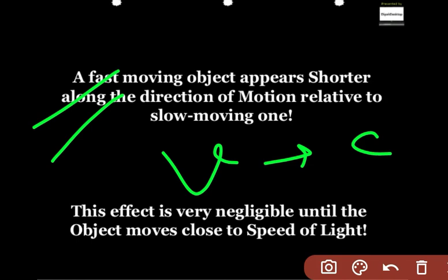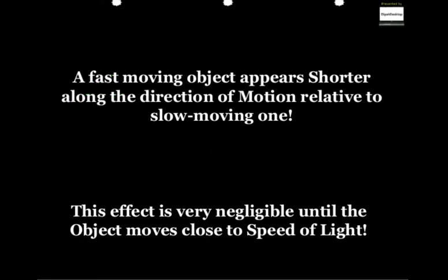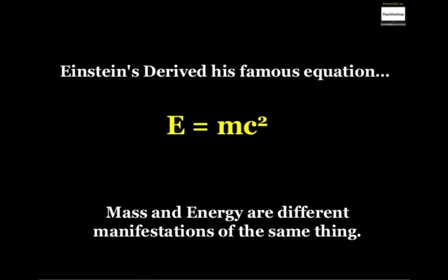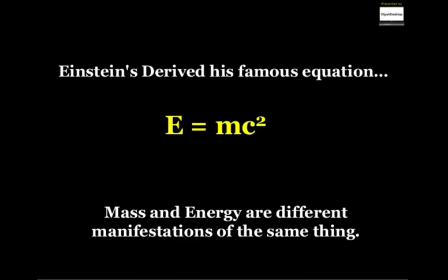Einstein derived his famous equation E equals mc squared. This relation gives the relationship between mass and energy. Mass and energy are different but can be interchanged between each other.